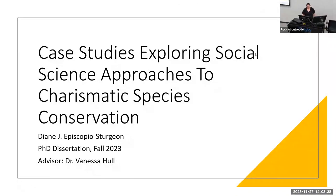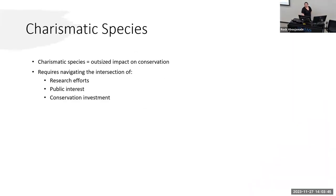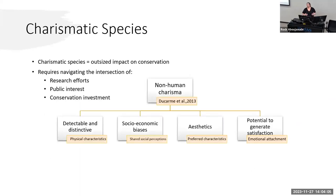Approaches to charismatic species conservation. Charismatic species have an outsized impact on conservation through heightened public interest and significant focus in terms of research and conservation investment. With this added attention and related emotions eliciting complex impacts on conservation. In trying to define charismatic species, the concept of charisma is both subjective and relative, making a succinct agreed-upon definition difficult to find.